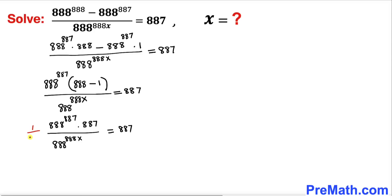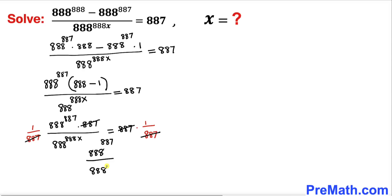Now let's multiply both sides of this equation by 1 divided by 887. On both sides, this 887 and 887 cancel out. So on the left-hand side we end up with 888^887 divided by 888^888 times x, equals to 1.